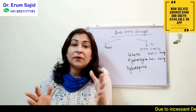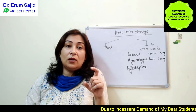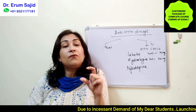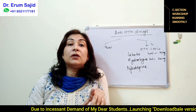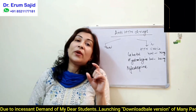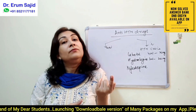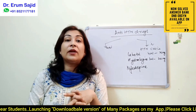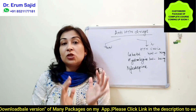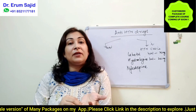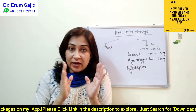Otherwise, labetalol can be given to all patients. In the market, labetalol comes as a 4 ml ampoule containing 20 milligrams, meaning each ml contains 5 milligrams. The starting dose is 10 to 20 milligrams IV, always given slow. You give it, wait 20 to 30 minutes, and you can repeat — so 20 to 80 milligrams can be given in 20 to 30 minute intervals.